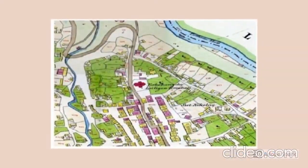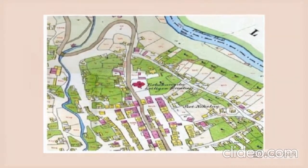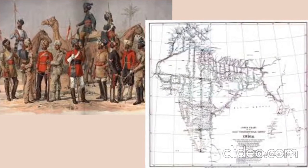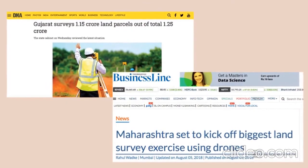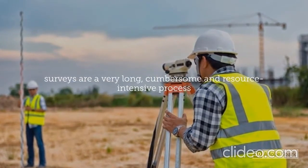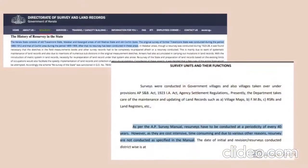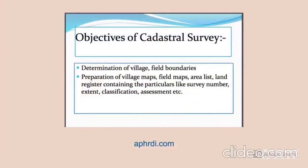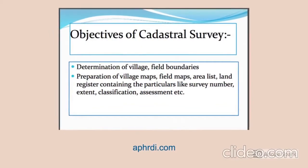A major hurdle in the integration is the updation of cadastral maps, which are sketched based on land surveys conducted. In many states, the last survey was conducted during the British era. Some states like Gujarat and Maharashtra have begun the process of re-survey, but many are yet to catch up. Land surveys are a very long, cumbersome, and resource-intensive process requiring a large staff. Even though states are supposed to conduct surveys every 30 to 40 years, they are still lagging, and until re-surveys are done and cadastral maps are brought up to date, the integration may not always be correct.